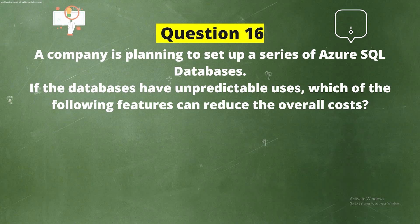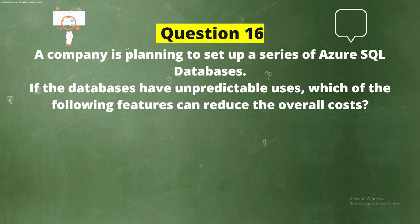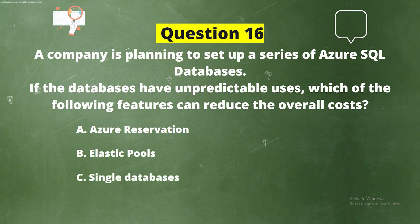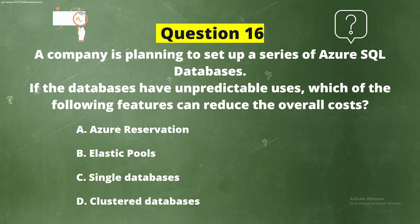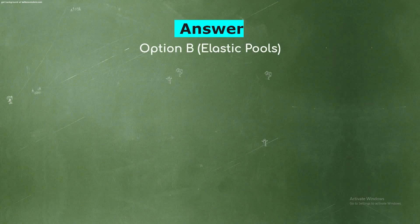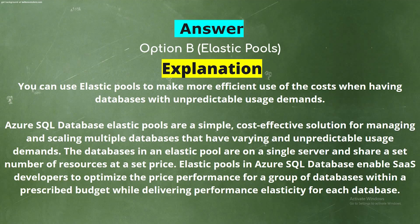Question 16. A company is planning to set up a series of Azure SQL databases. If the databases have unpredictable usage, which of the following features can reduce the overall cost? Option A: Azure Reservation. Option B: Elastic Pools. Option C: Single Databases. Option D: Clustered Databases. The correct answer is Option B, Elastic Pools.